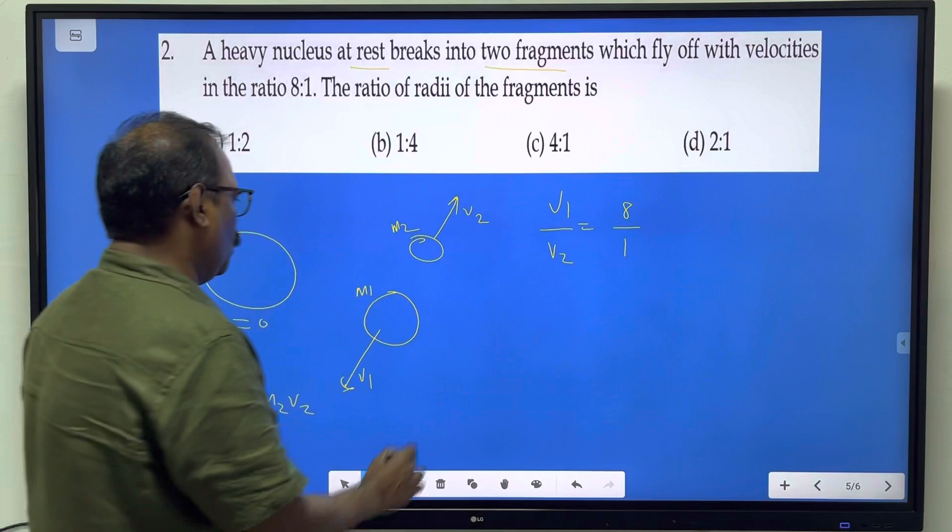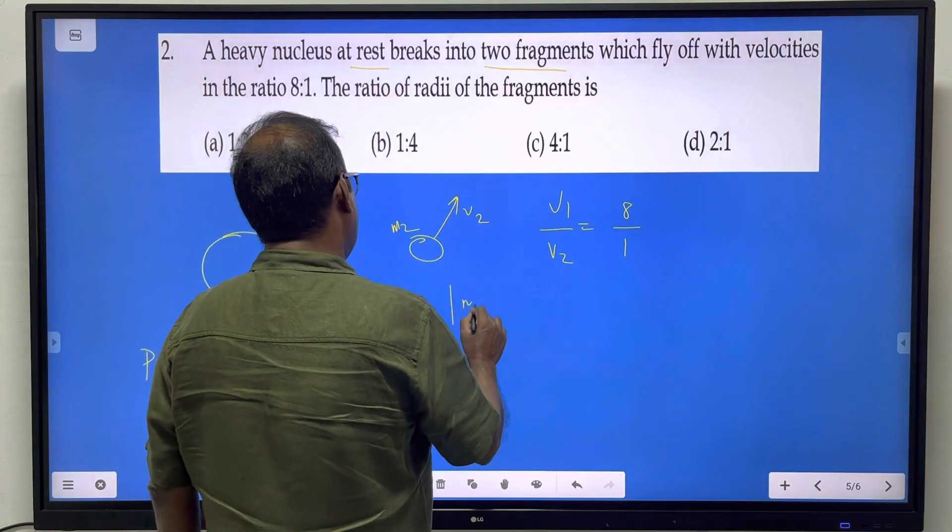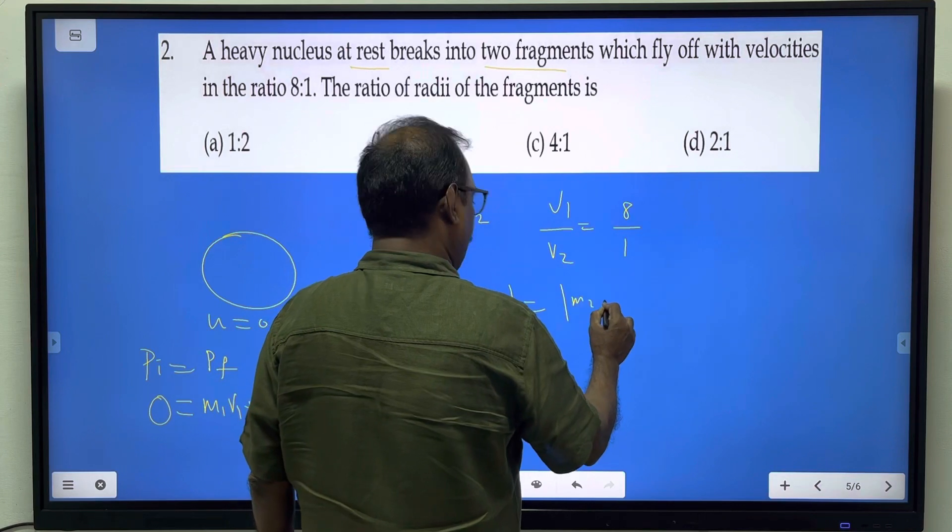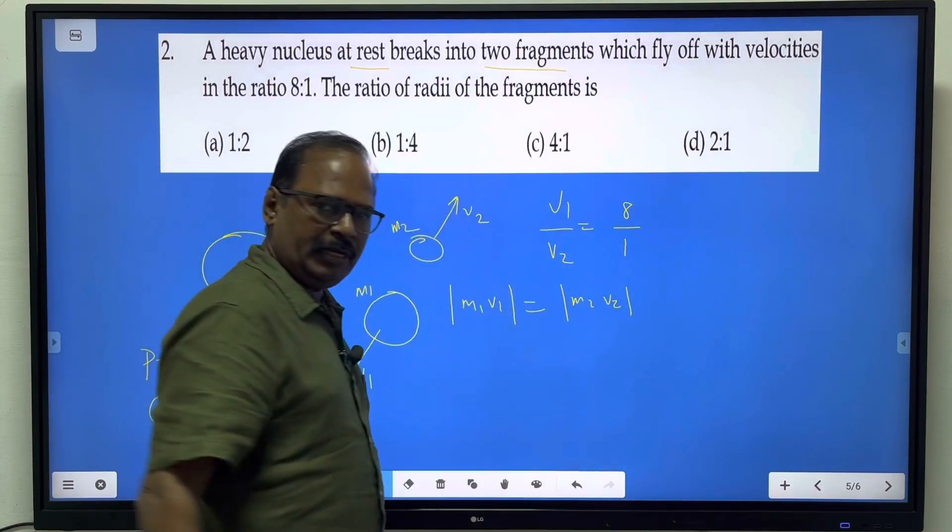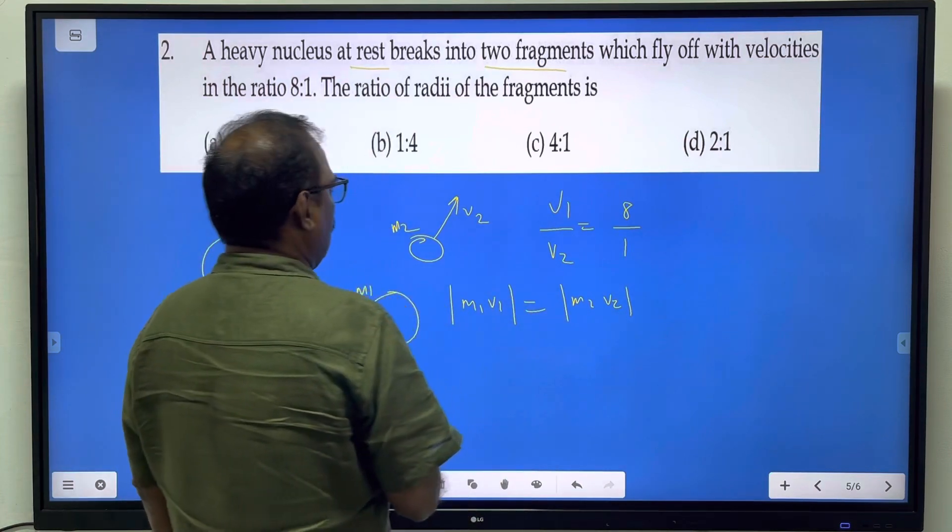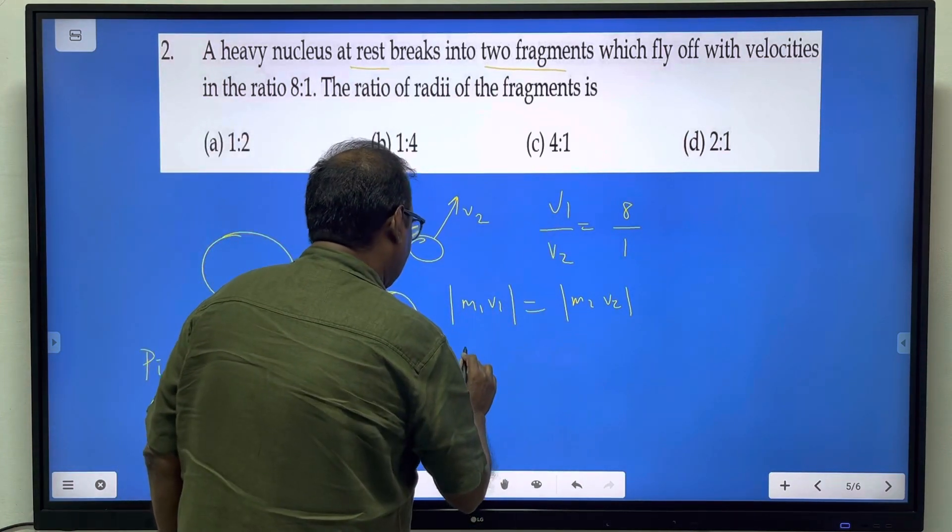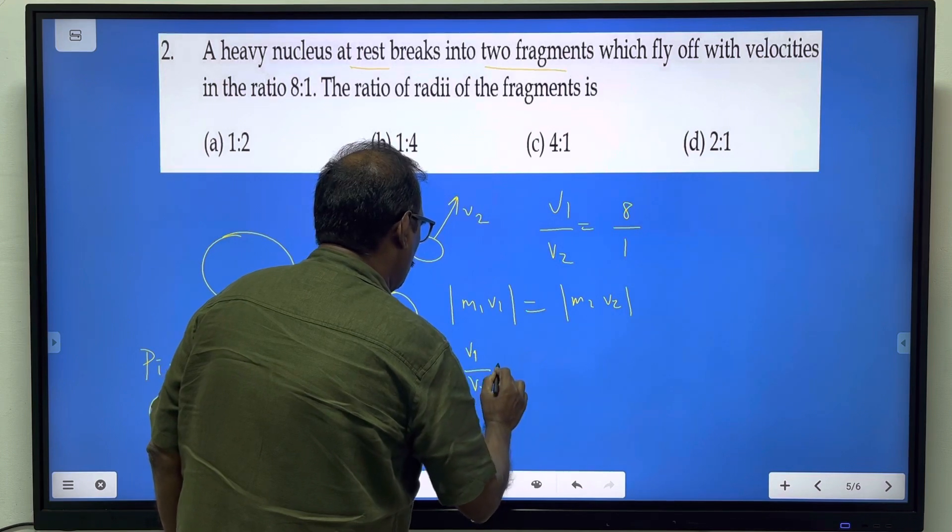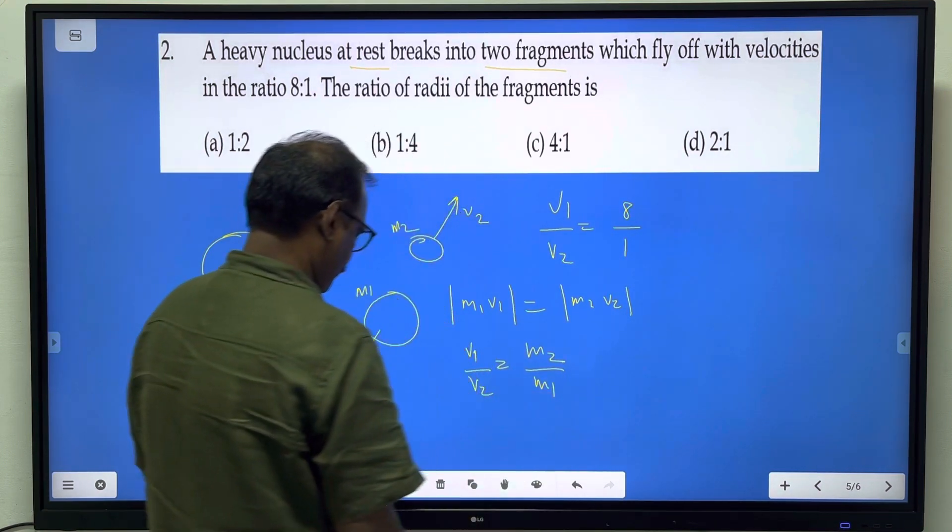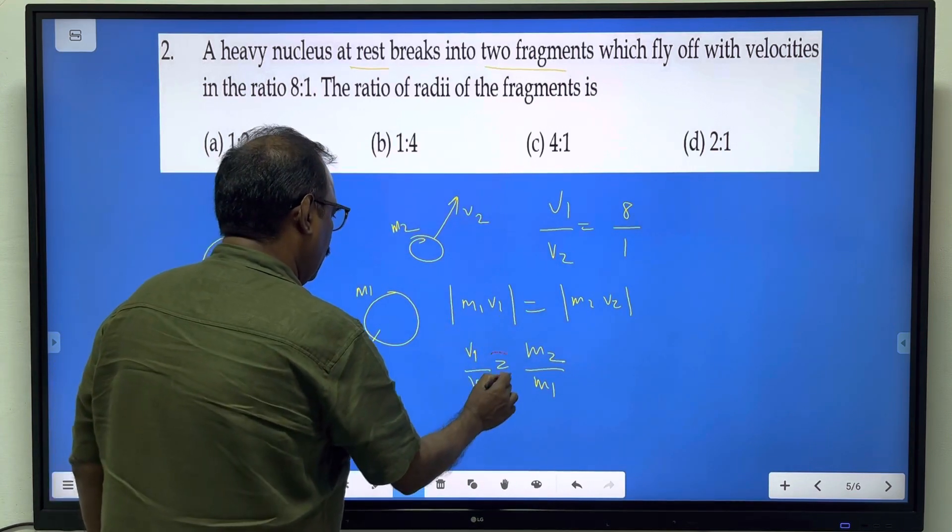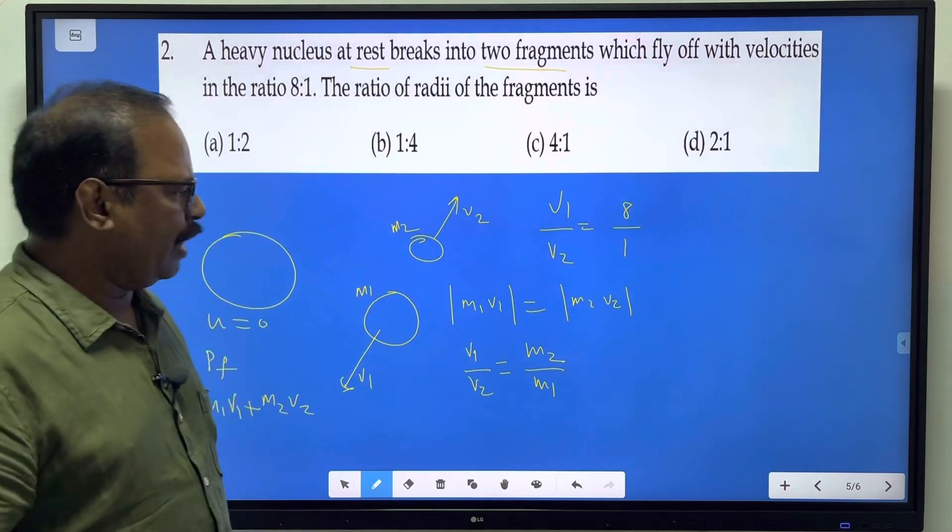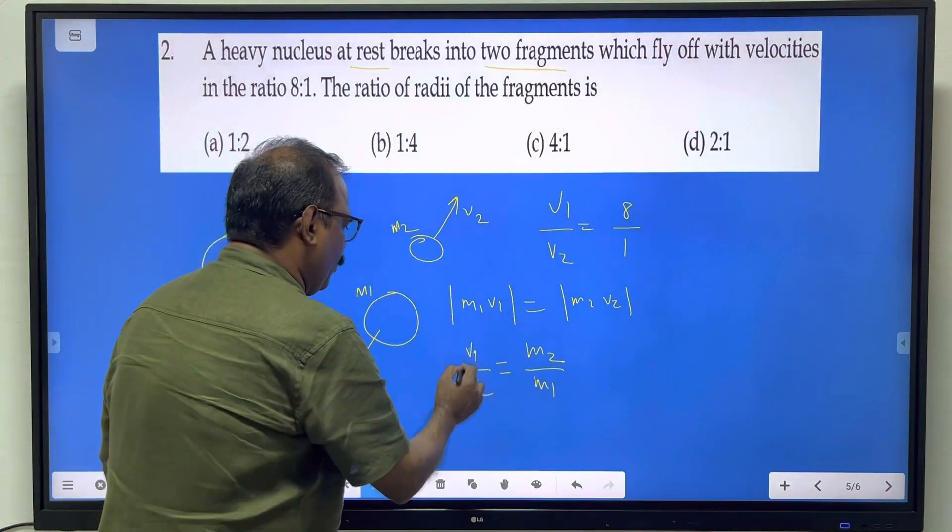Looking at magnitudes, we have m1v1 and m2v2. From momentum conservation, m1v1 equals m2v2. Therefore, the ratio of velocities v1 by v2 equals m2 by m1. Cross multiplying, we get m1v1 equals m2v2.